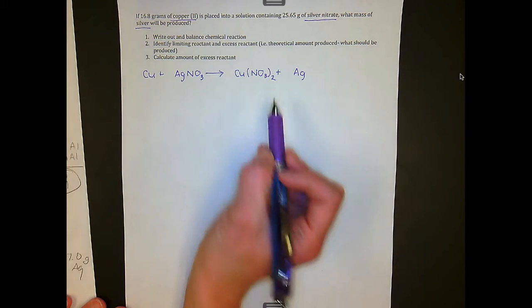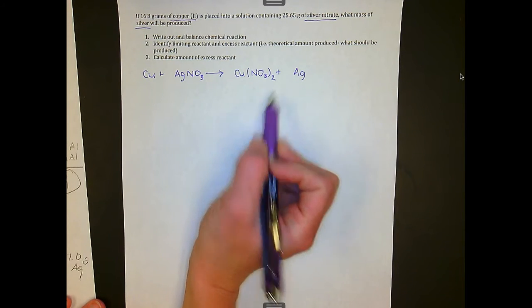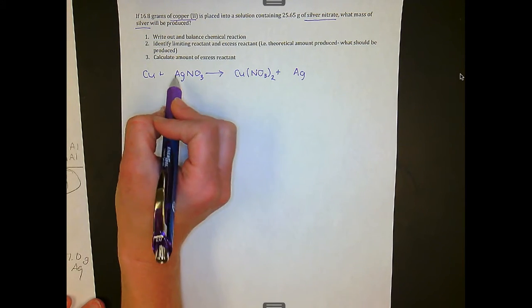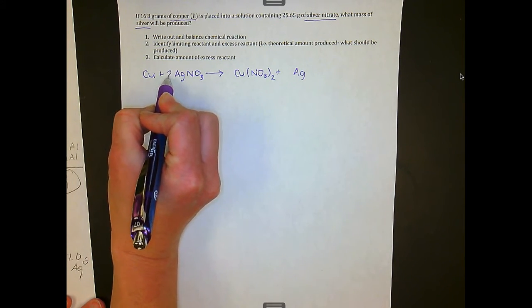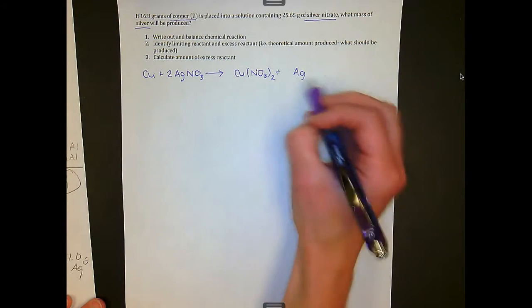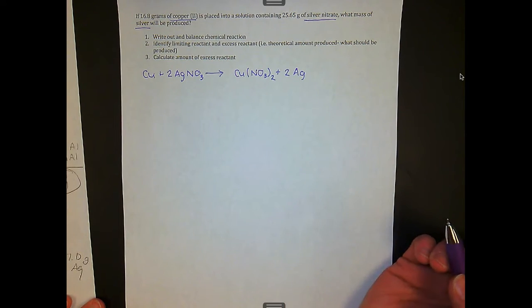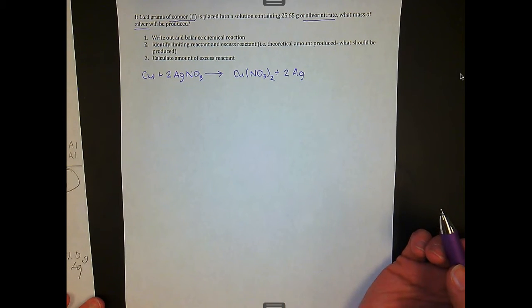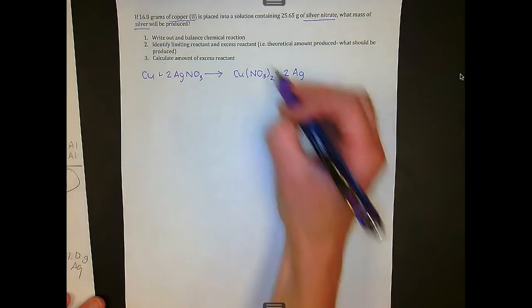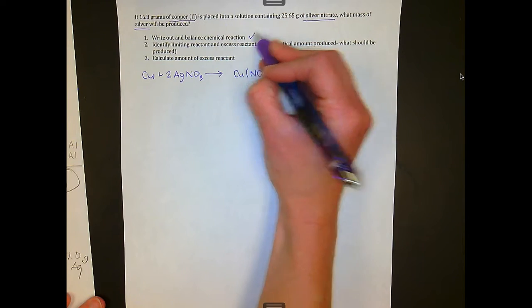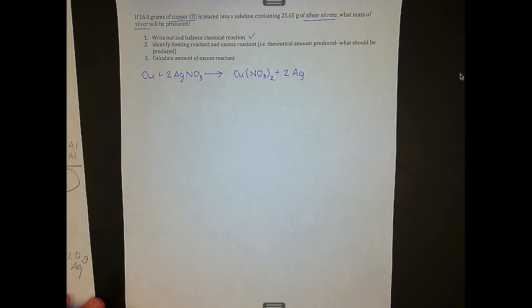Now I need to go through and balance. I see that I have 2 nitrates, so I'm going to add a coefficient of 2 there. Now I have 2 silvers, which means I add a coefficient of 2 there, and it's balanced. Step 1 is complete.